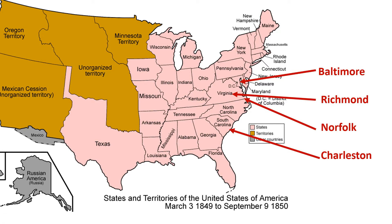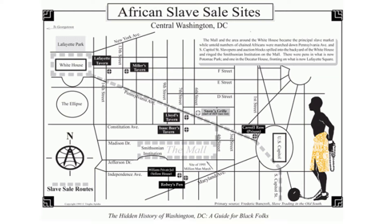Baltimore, Richmond, Norfolk, and Charleston were the principal trading spots in the older upper and eastern South — this is where the domestic slave trade would begin. There were numerous slave trading spots and slave markets even in Washington DC, one within blocks of the Capitol. Foreigners in the antebellum age visiting DC would go to the slave auction pens as a sort of novelty attraction — not the best thing for America.